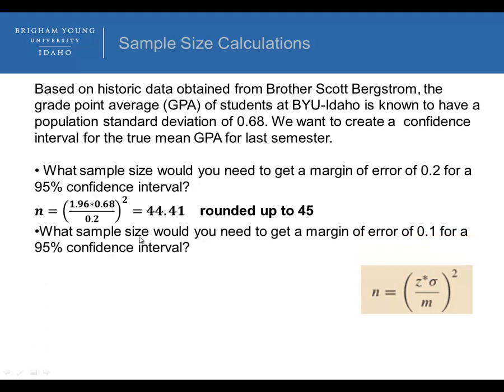What sample size would you need to get a margin of error of 0.1 for a 95% confidence interval? The only difference is that instead of a margin of error of 0.2, we have 0.1. We solve for it and get 177.64, rounded up to 178.